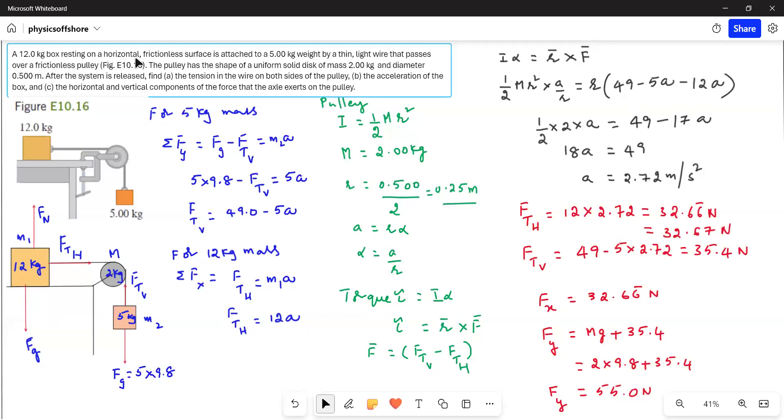A 12 kg box resting on a horizontal frictionless surface is attached to a 5 kg weight by a thin light wire that passes over a frictionless pulley. The pulley has the shape of a uniform solid disk of mass 2 kg and diameter 0.5 m.